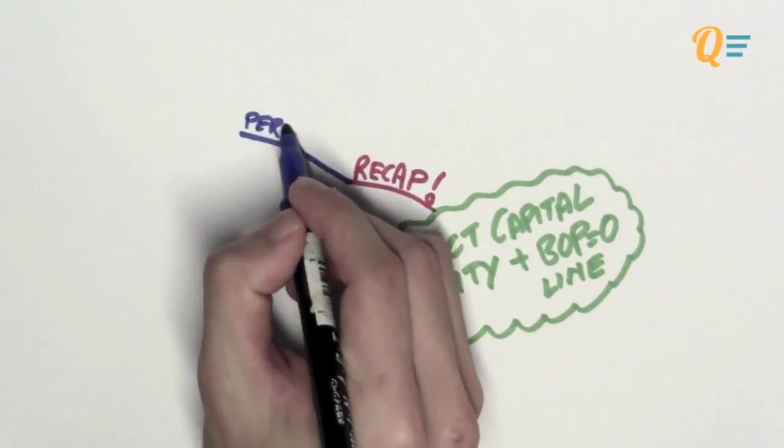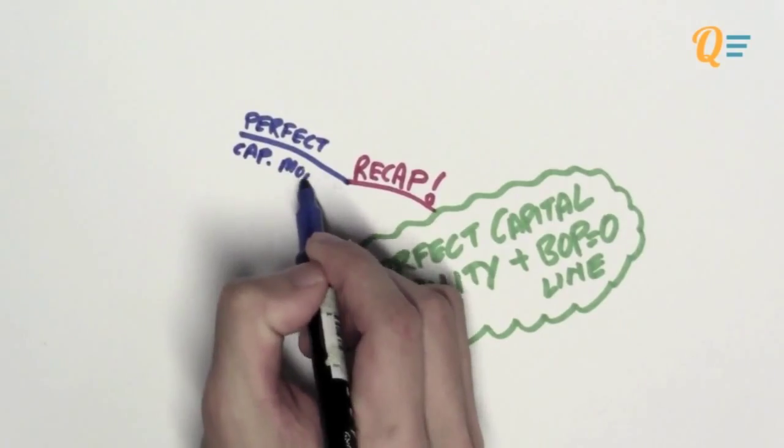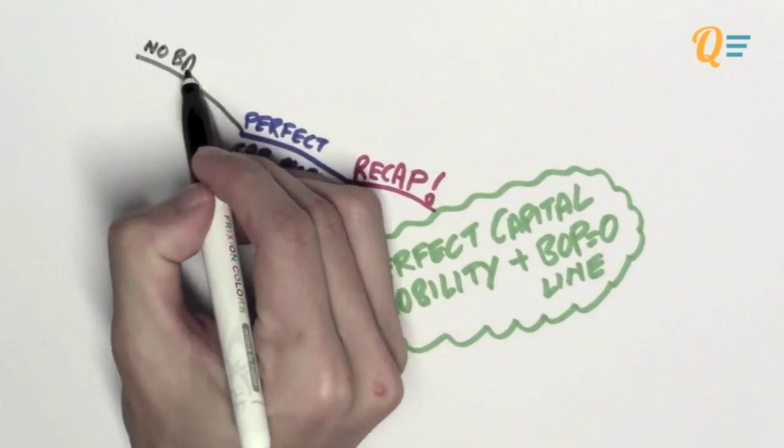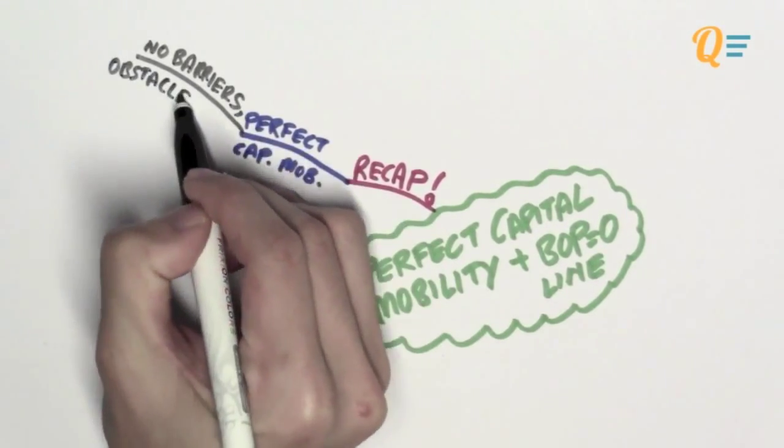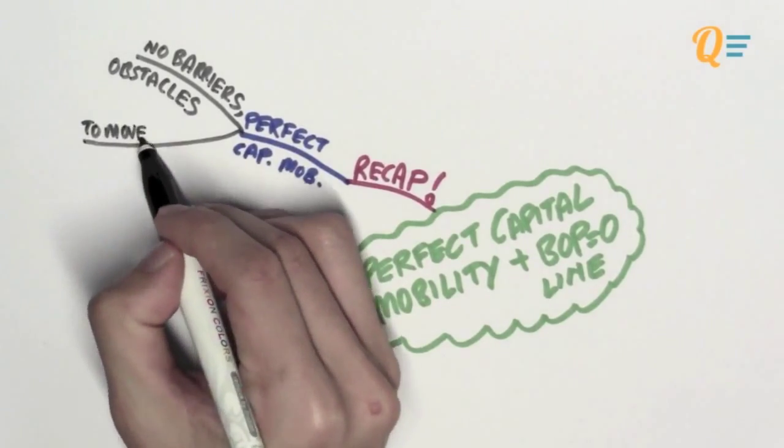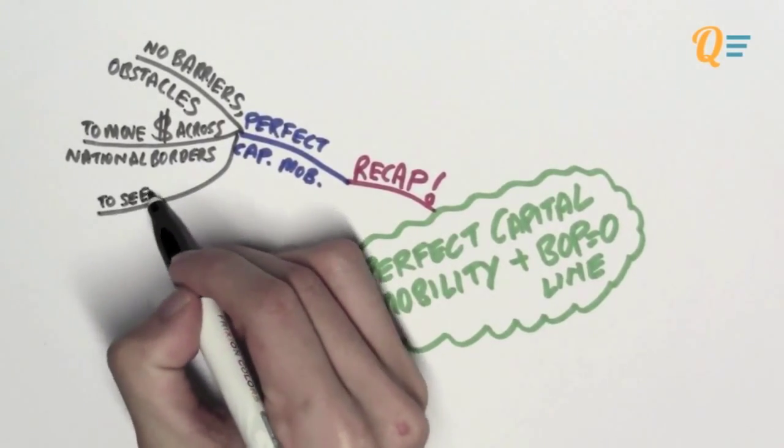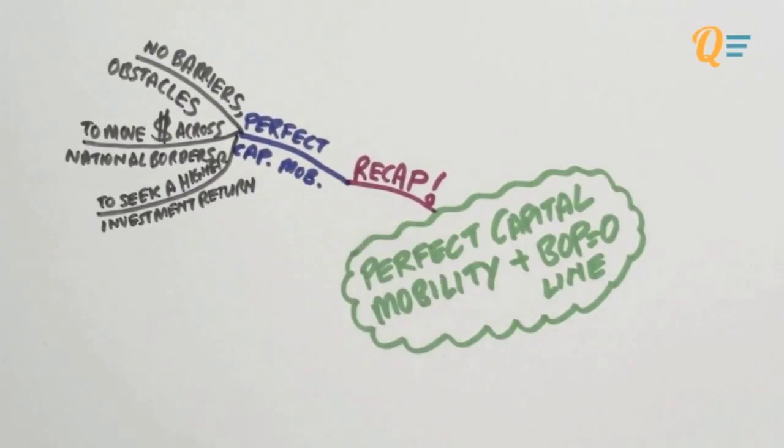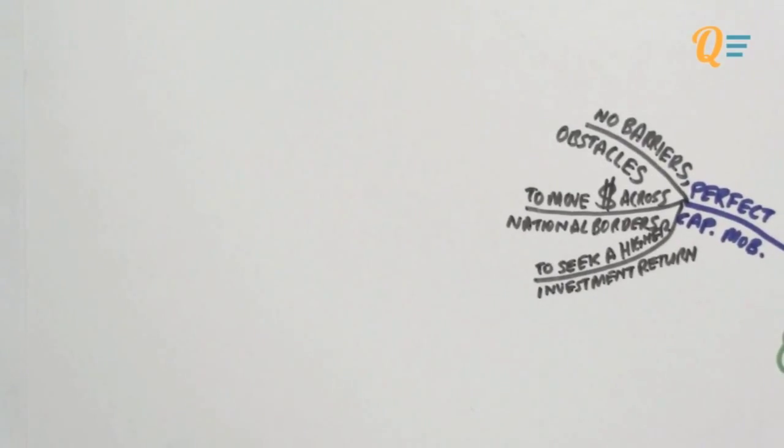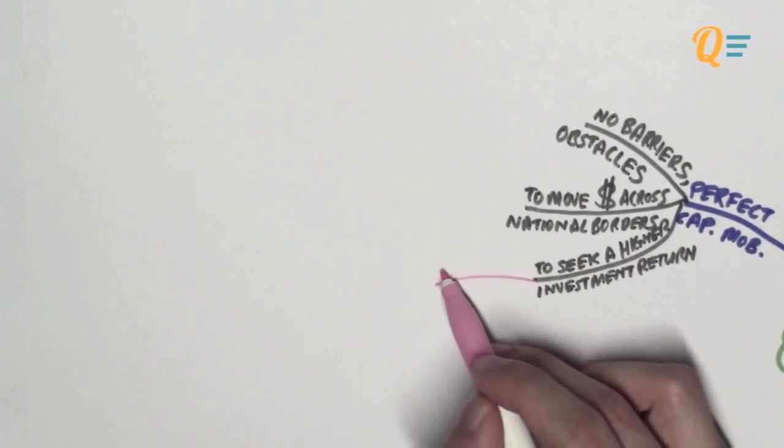So let's do a quick recap on what it means when an open economy has got perfect capital mobility. What this means is that there are no barriers or obstacles to move money across national borders to seek a higher investment return.